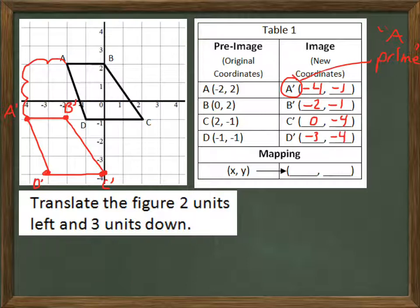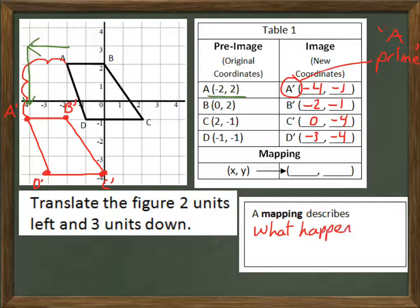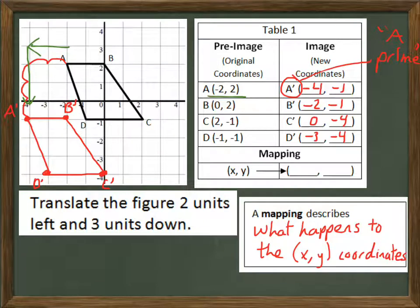So now there's this thing in the table called a mapping. Well, what is that? A mapping describes what happens to the XY coordinates. So in this one, we translated it two left and three down. But what does that change about the coordinate points themselves?